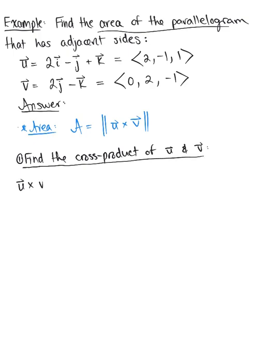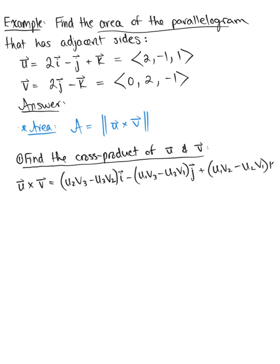Recall that vector u cross vector v equals (u₂·v₃ - u₃·v₂) times unit vector i, minus (u₁·v₃ - u₃·v₁) times unit vector j, plus (u₁·v₂ - u₂·v₁) times unit vector k.